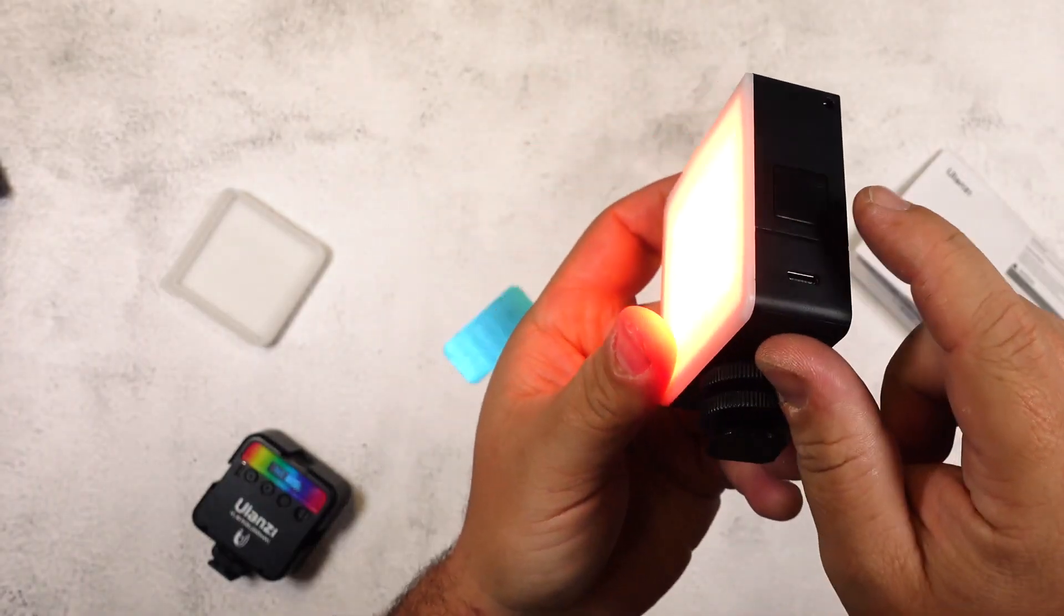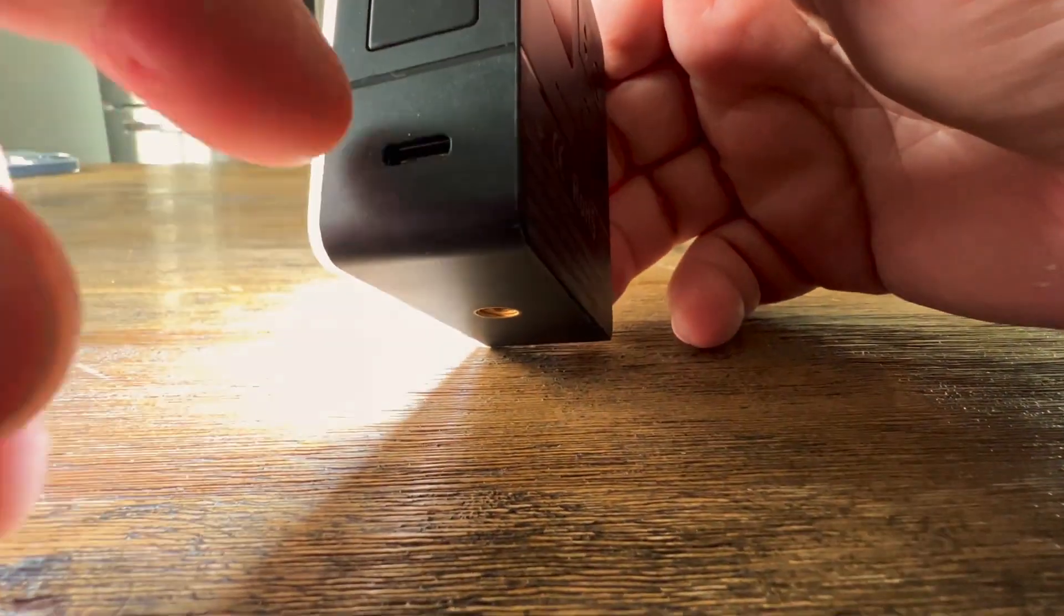There's a 2500 milliamp hour rechargeable battery meaning the light can be used at full brightness for 90 minutes and 10 hours at the minimum brightness. You can charge it up with the included USB-C cord or even use the light while it's plugged in.